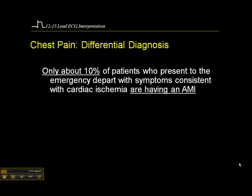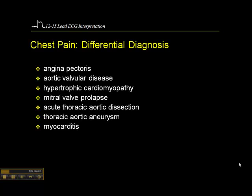That means the other 90% may fall under the category of angina, pleurisy, pulmonary embolus, or any one of a number of other conditions. So let's talk about a fairly long list of things that might fall into that differential diagnosis. Your patient may be presenting with angina pectoris, aortic valvular disease, hypertrophic cardiomyopathy, or mitral valve prolapse. Part of your assessment might involve auscultating for heart sounds.